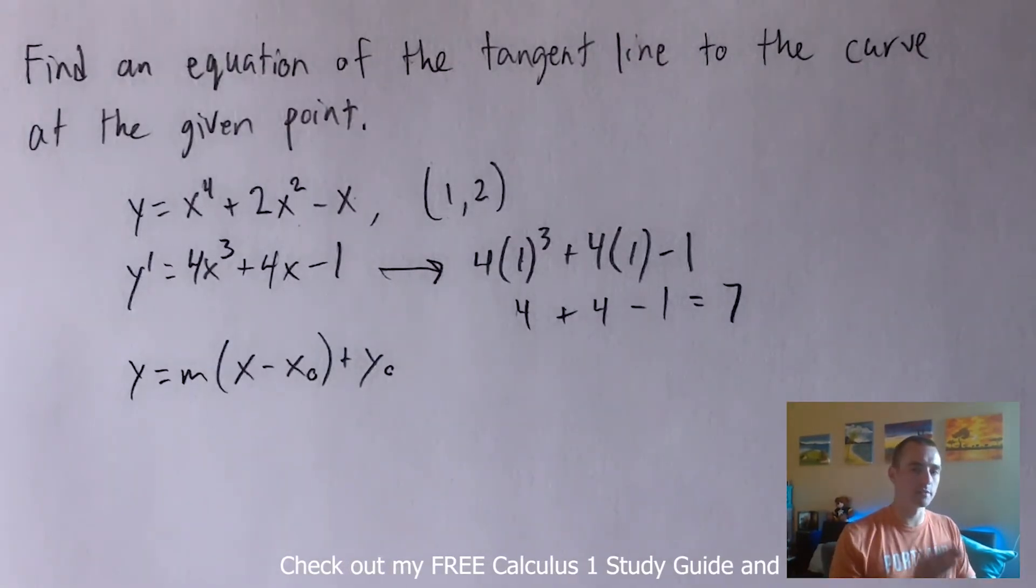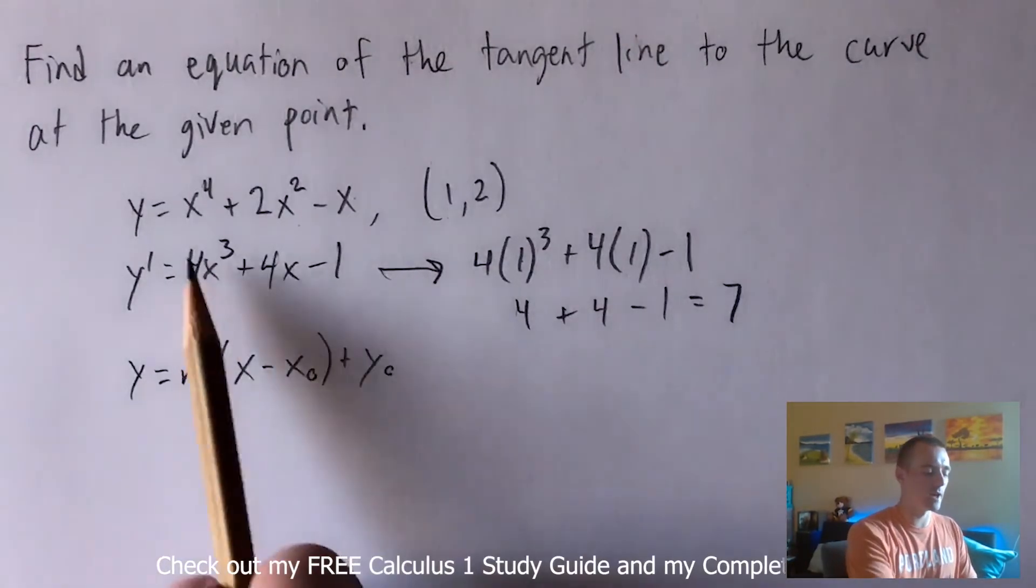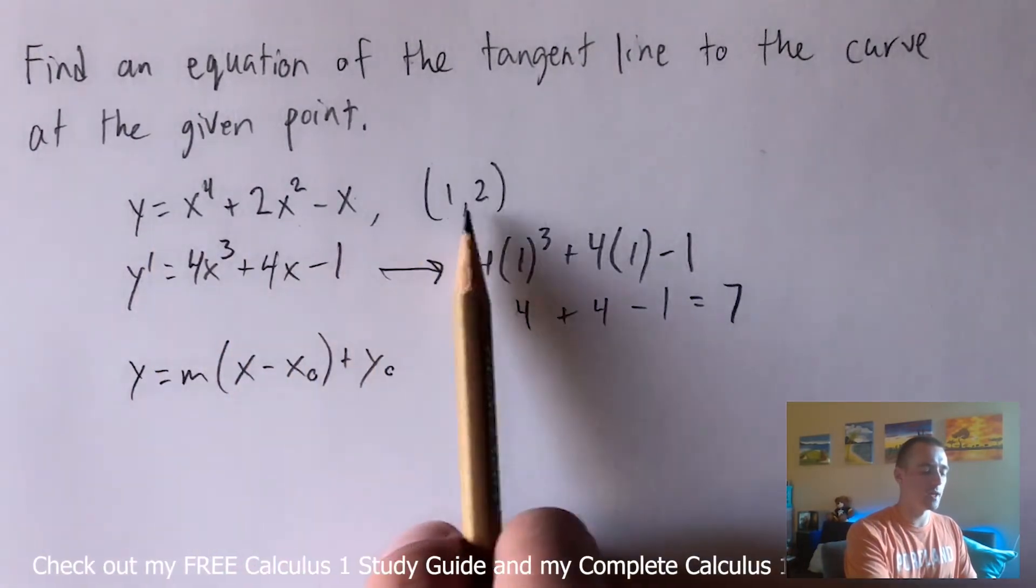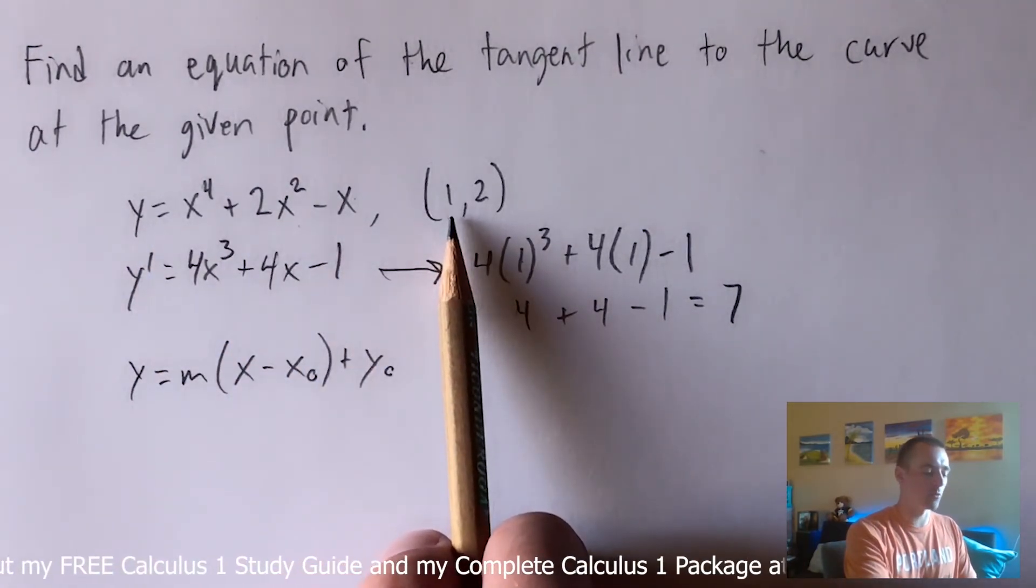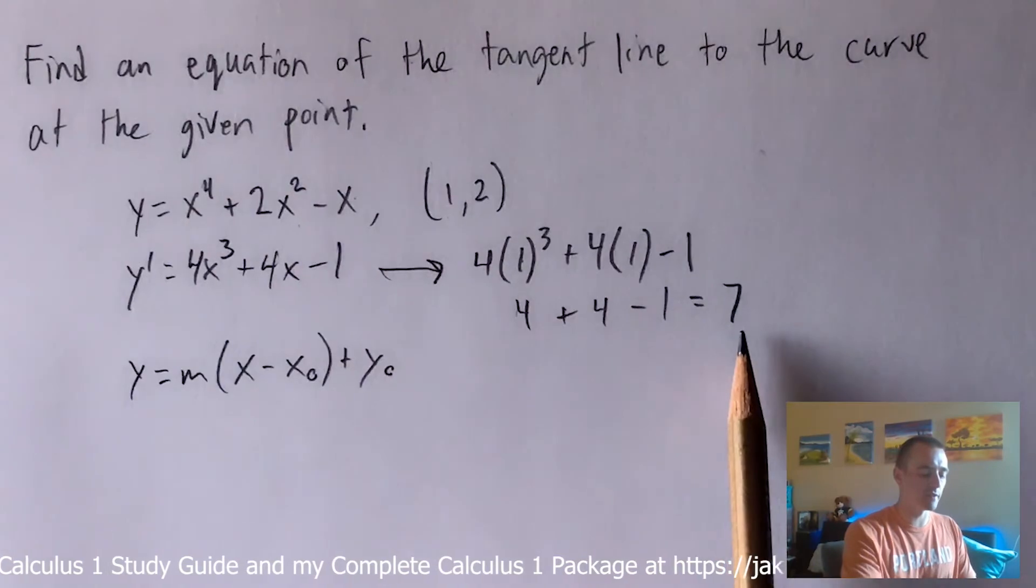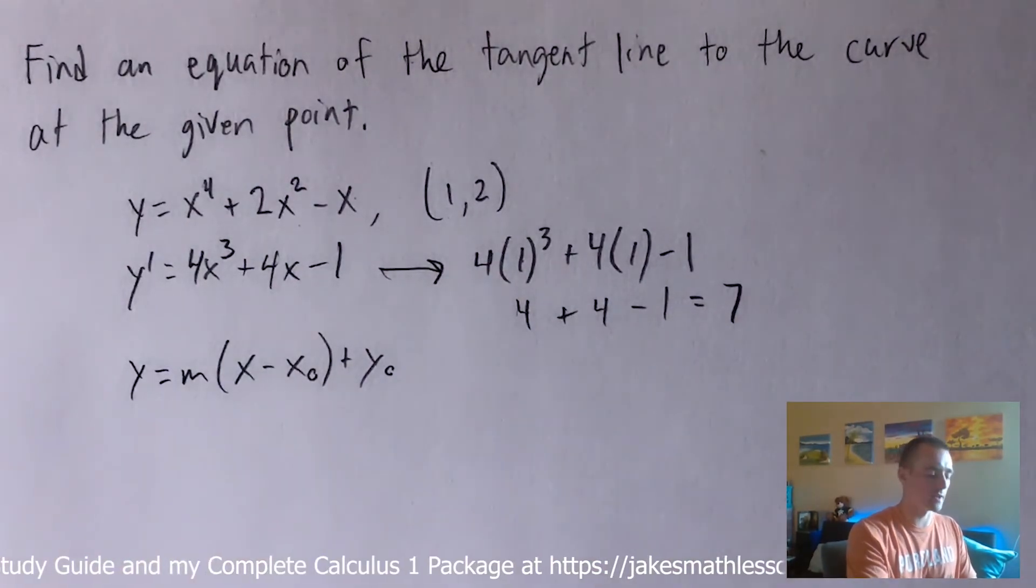So what that tells us is the slope of our original curve that we had here when x equals 1, at this point that we're given, the slope is 7. So we know that the slope of our tangent line has to be 7 then.